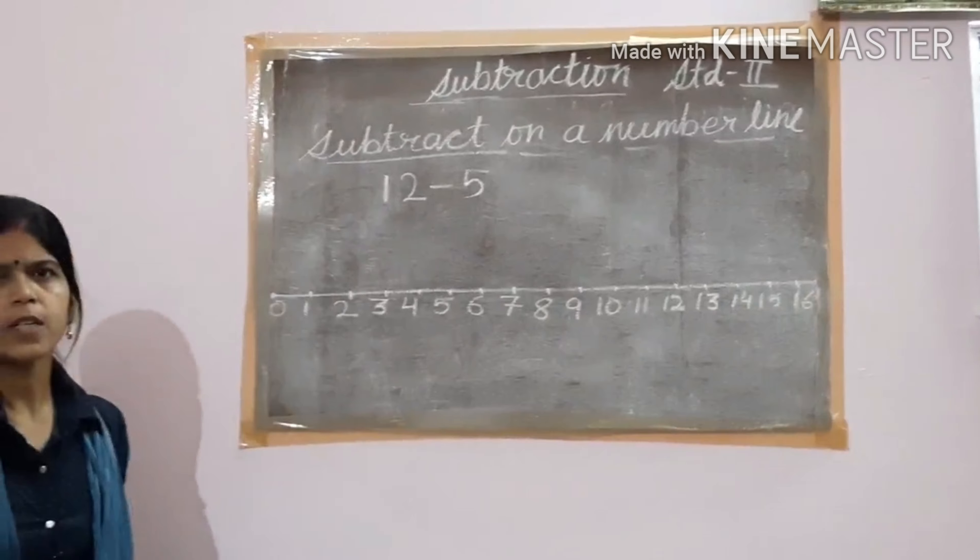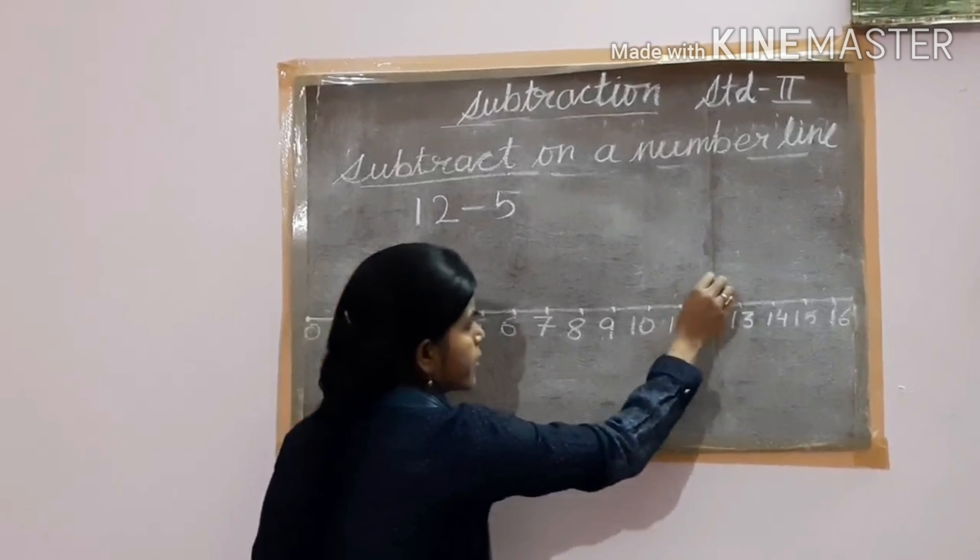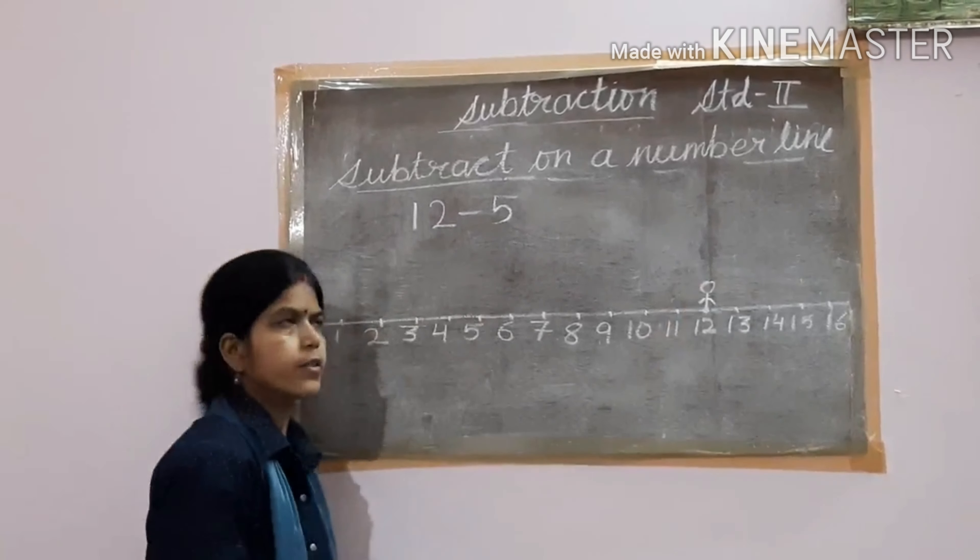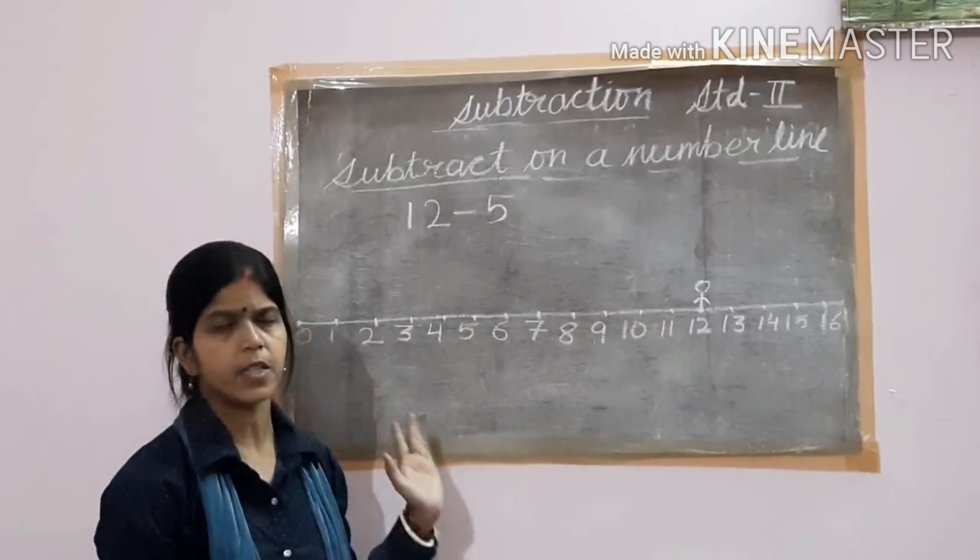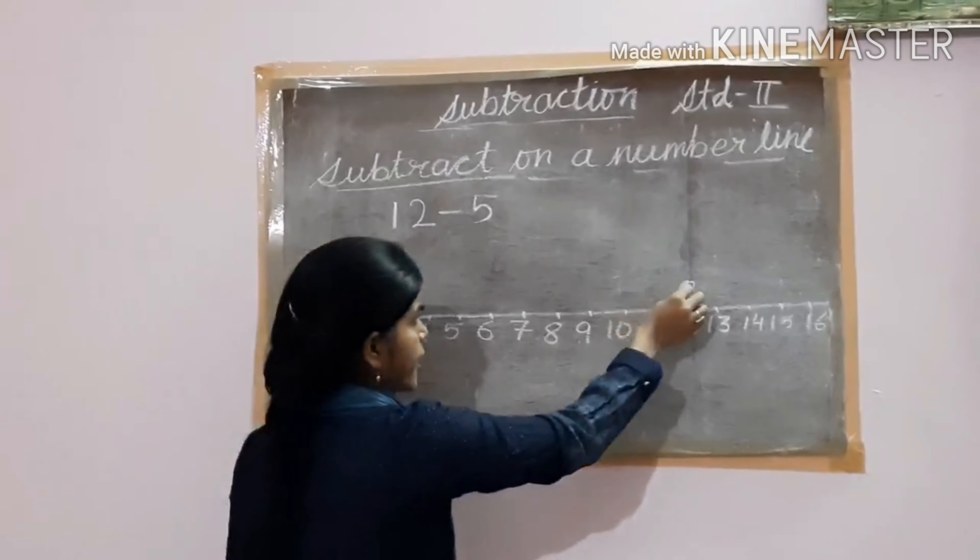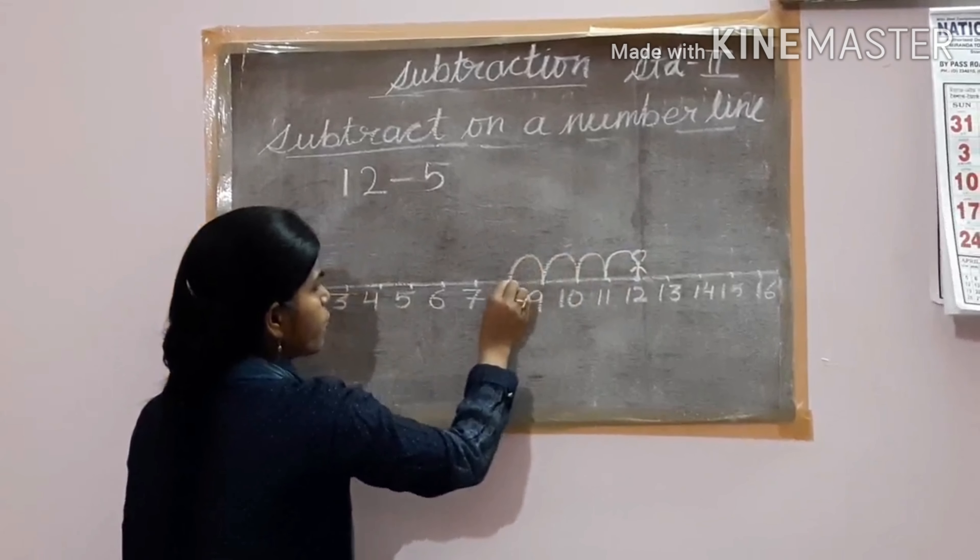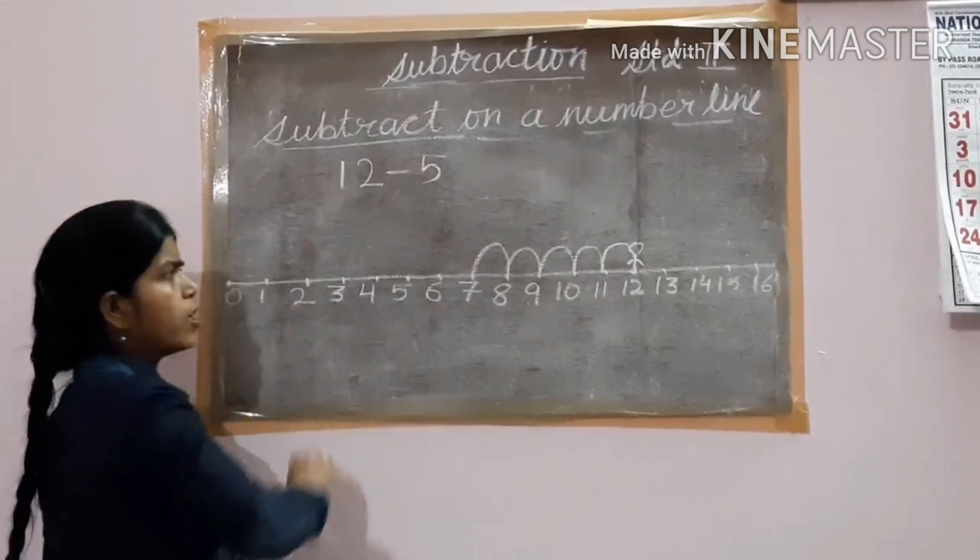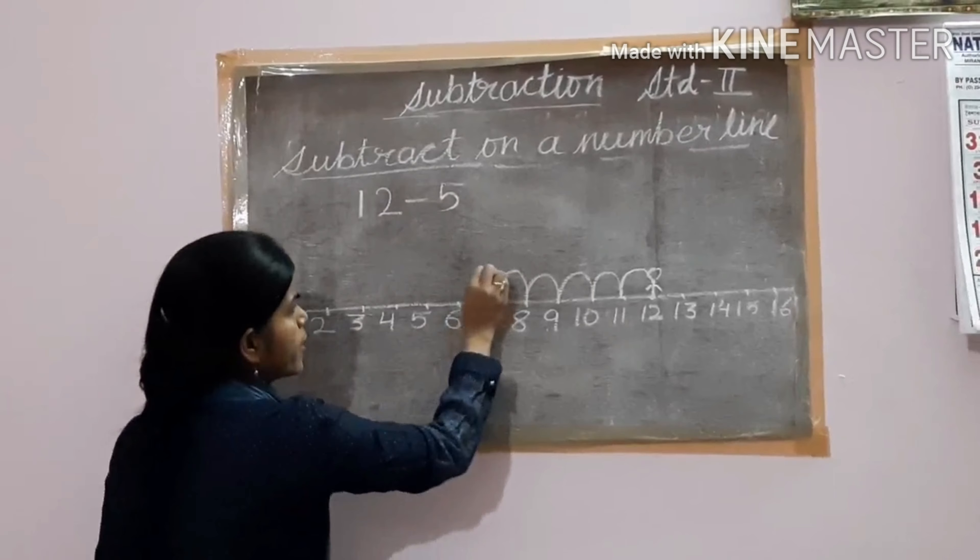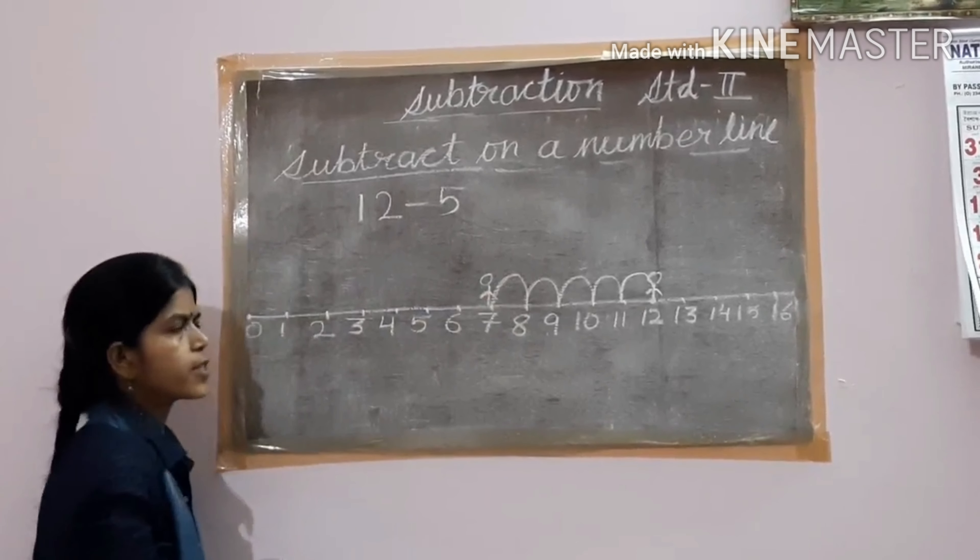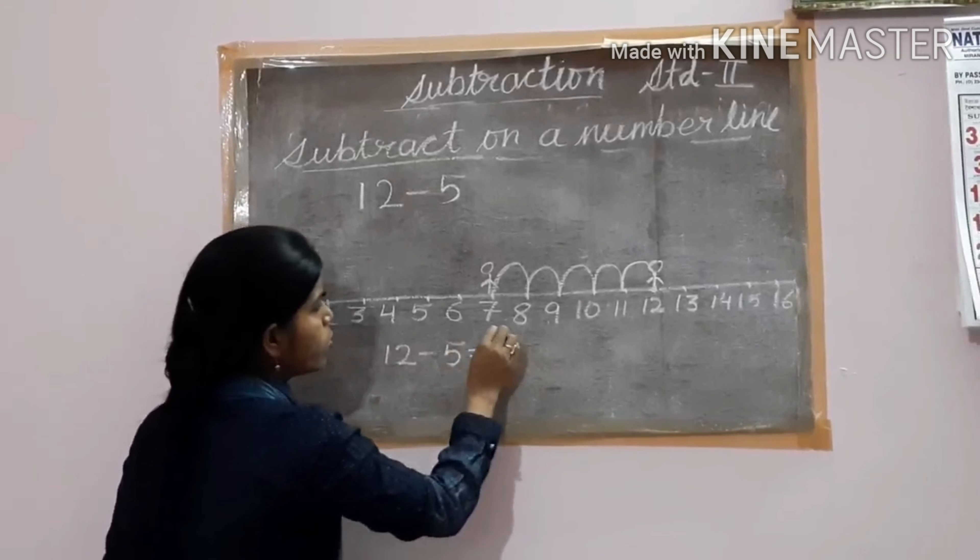Now what is the bigger number here? 12. And we will start from 12. Now you are here. Now the smaller number is 5, so you will come backward 5 steps. Back. Now let us start from here: 1, 2, 3, 4, 5. Only 5 is there because you have to subtract only 5. So now where are you here now? At number 7. That is your answer. So 12 minus 5 is equal to 7.